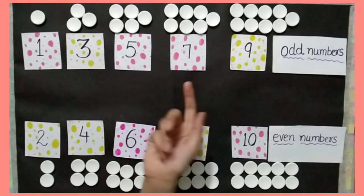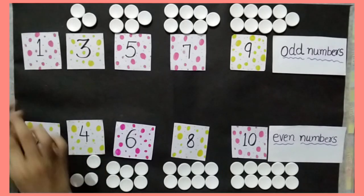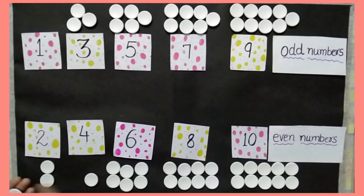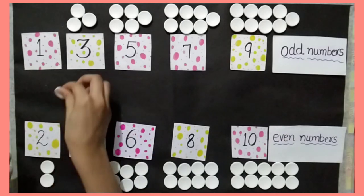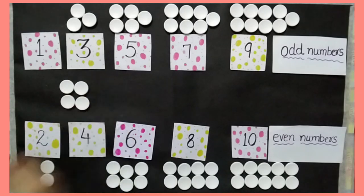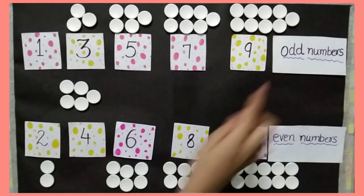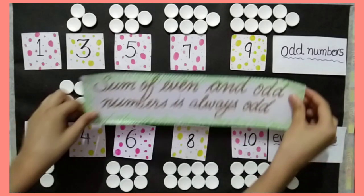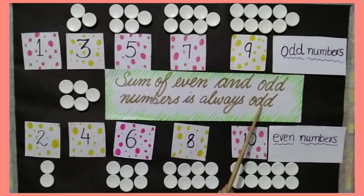Now I am taking 1 token from the odd numbers and 4 tokens from the even numbers, and I will count them together: 1, 2, 3, 4, 5. Five tokens do not make complete pairs, and 5 is an odd number. It means that the sum of an even and an odd number is always odd.